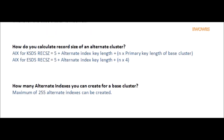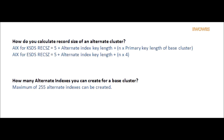Question: How do you calculate the record size of an alternate index cluster? Answer: Record size of an alternate index for a Key Sequential Data Set is calculated as: 5 + alternate index key length + (n × primary key length of base cluster). Record size of an alternate index for an Entry Sequential Data Set is calculated as: 5 + alternate index key length + (n × 4).